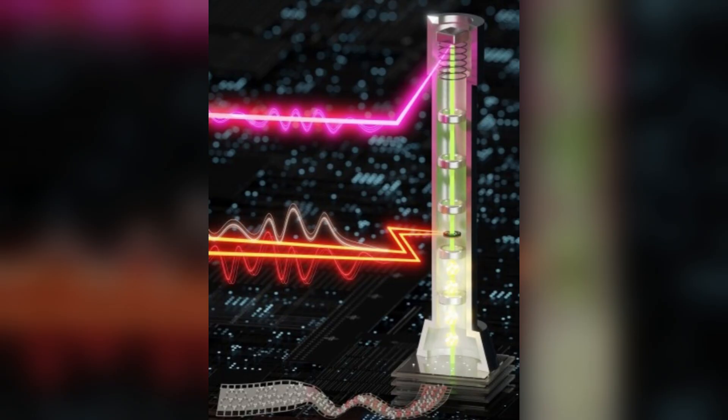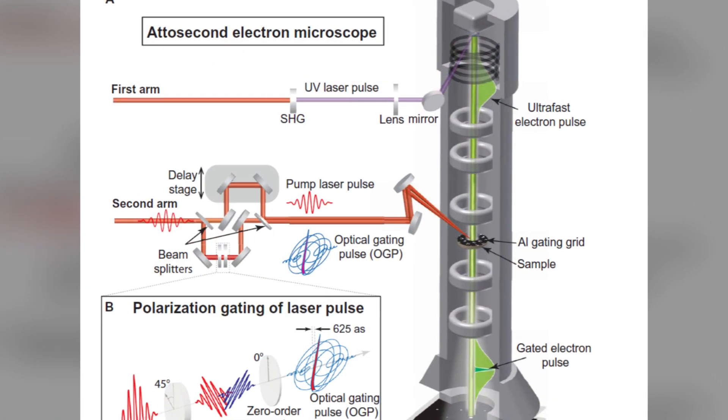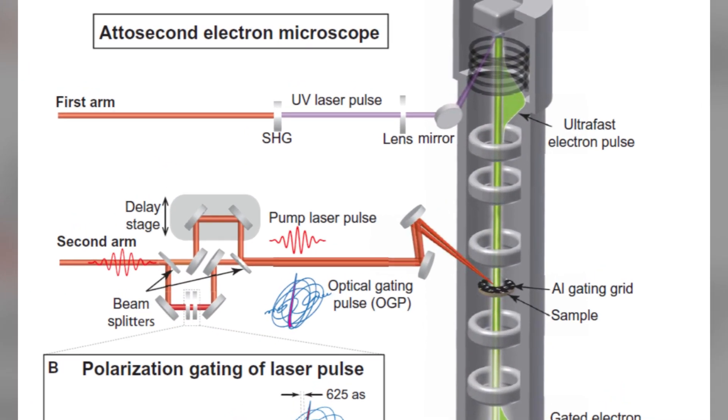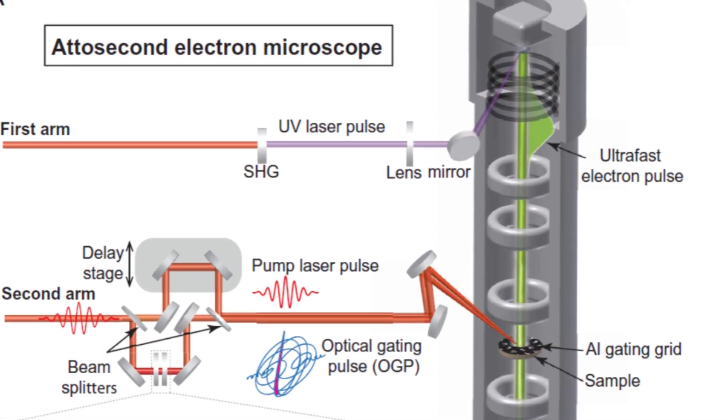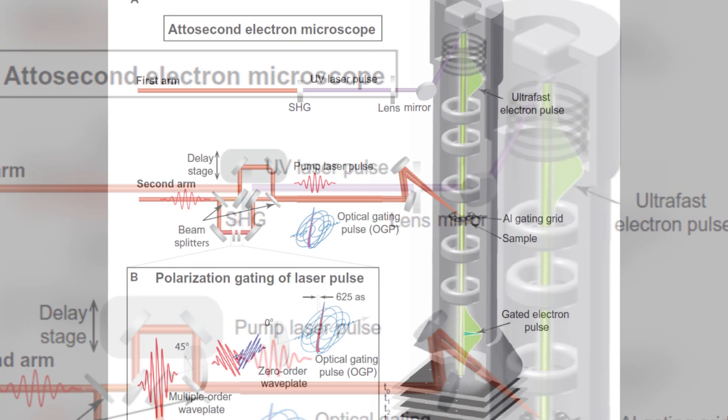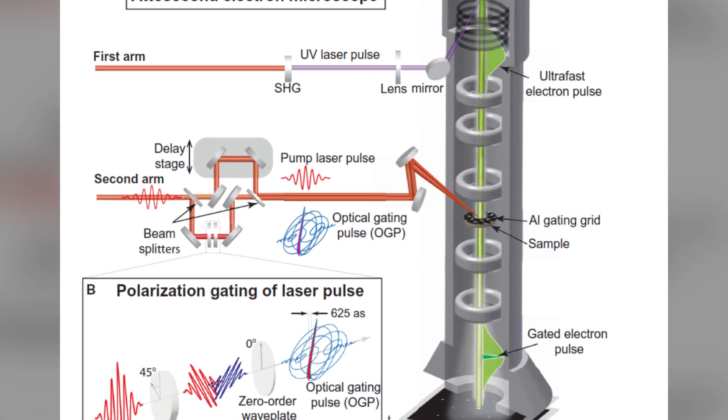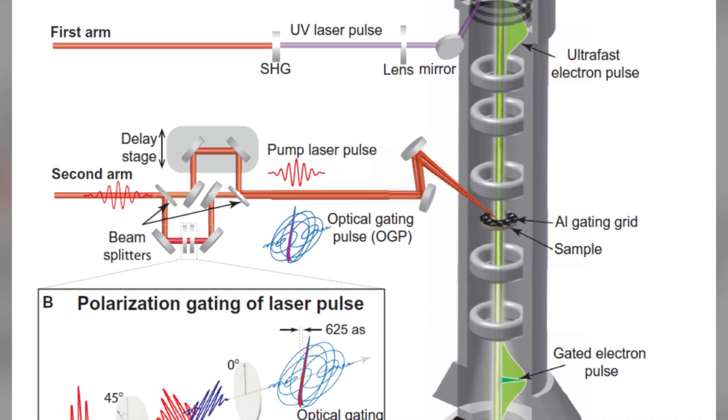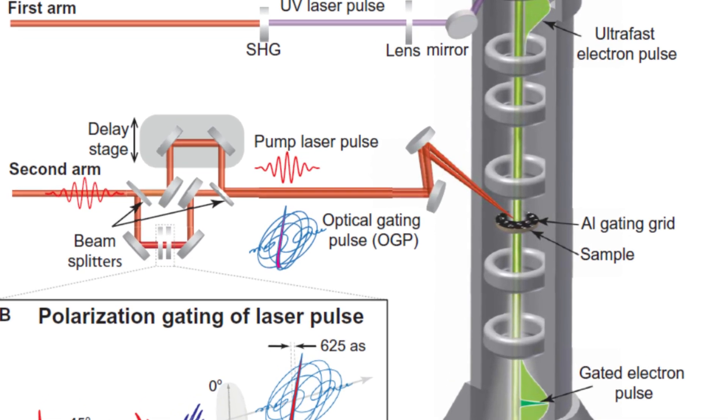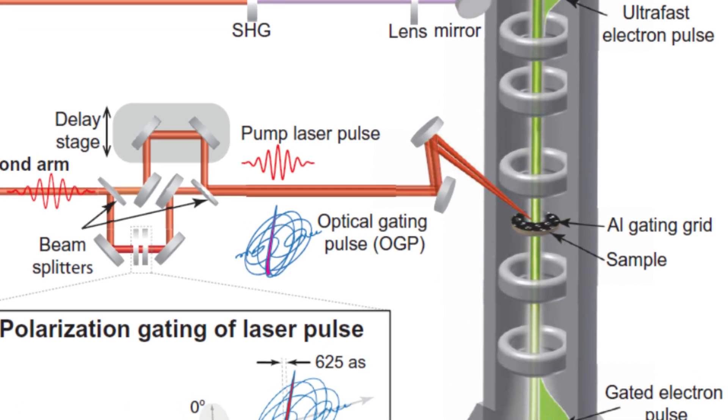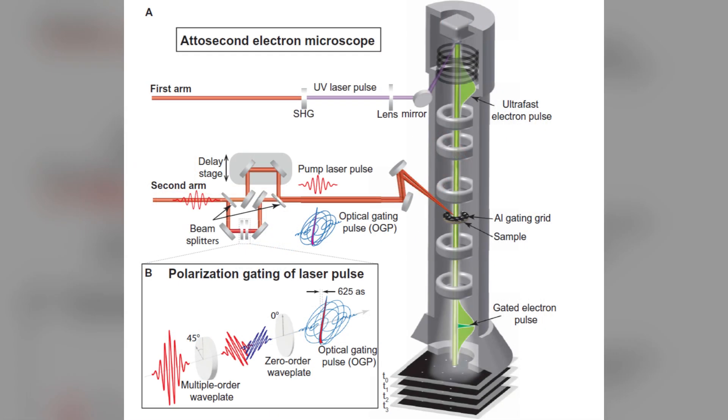The ATTO microscope is divided into two main sections. The top section generates an ultraviolet pulse that releases ultrafast electrons inside the microscope. Meanwhile, the bottom section utilizes two additional laser pulses to gate, initiate, and precisely control the movement of electrons within the sample. This innovative setup uses a technique involving three pulses: two EM pulses and an electron pulse.